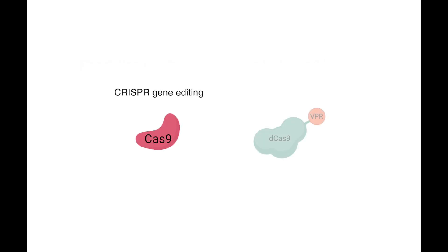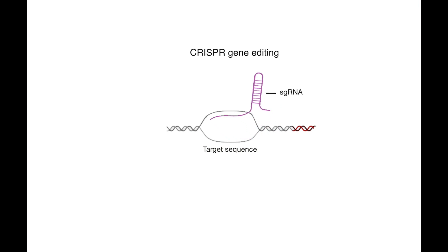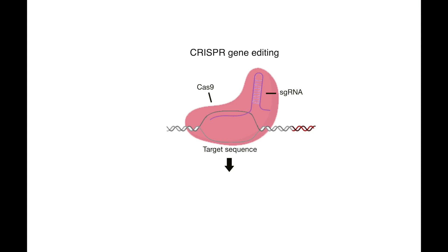To engineer species, we utilize CRISPR gene editing and CRISPR-based transactivation. CRISPR gene editing requires two components: a single guide RNA that binds to the target sequence, and a Cas9 endonuclease that binds to the single guide RNA and makes a double-stranded DNA break.